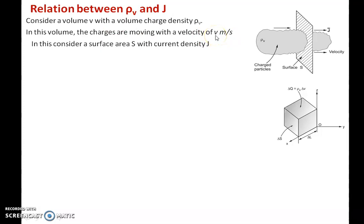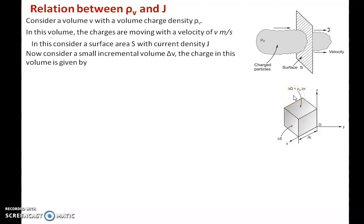The unit of velocity is meter per second, the unit of rho V is Coulomb per meter cube, and the unit of current density is ampere per meter square. At the end of this derivation, we will see how volume charge density and current density are related. In a volume charge distribution, I can write the charge as delta Q equals rho V into delta V.